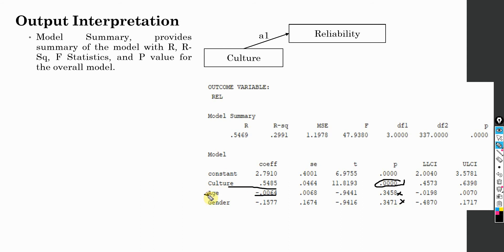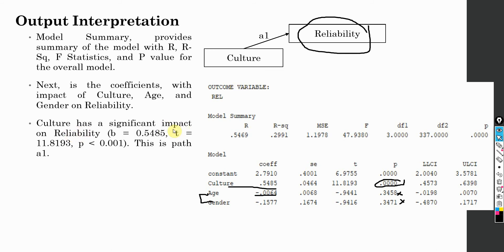Both covariates are insignificant, so they do not affect this endogenous variable. Culture has a significant impact. The beta value is 0.5485, here is the t-statistic, and the p-value is less than 0.001. This is path A1.